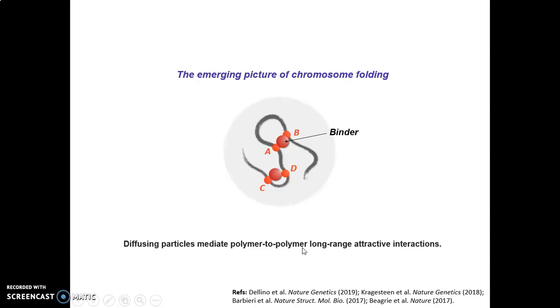Now, from a physics point of view, the DNA is simply a polymer, and the binders as well are molecules. Hence, the basic idea is that we can understand how the 3D structure of the genome arises starting from physics.